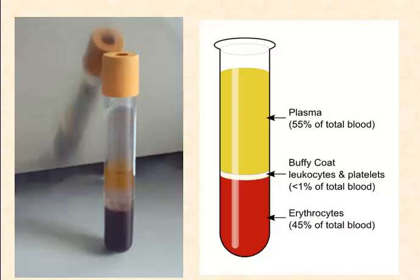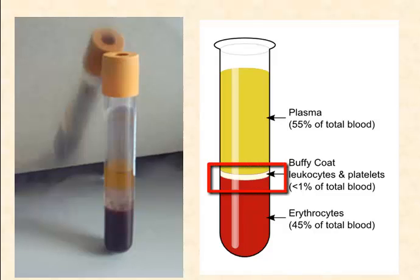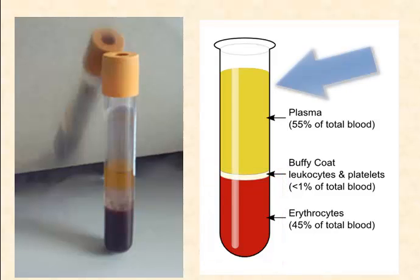Blood. If blood is centrifuged, its components separate by mass. Plasma makes up 55% of all the blood. White blood cells and platelets make up less than 1%, and the other 45% is red blood cells. 90% of plasma is water. This is where many chemical reactions take place. It helps maintain blood volume and therefore blood pressure, and it absorbs and carries heat.